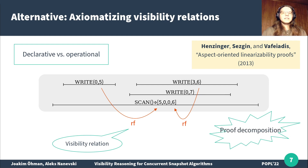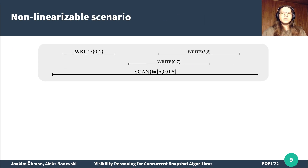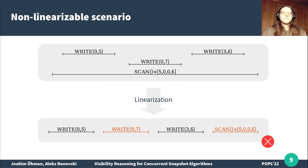We will use these relations to reason about the inner workings of algorithms and develop axioms for snapshots. Going back to our scenario, if we adjust the example so that the write of 7 happens before the write of 6, then if we try to linearize that scenario, we end up with a contradiction, since the scan must have read 7 but the scan missed it instead. This means that this simple algorithm is not linearizable.